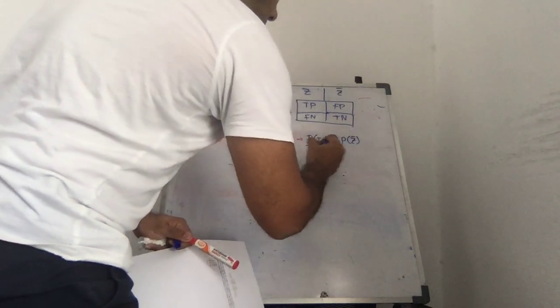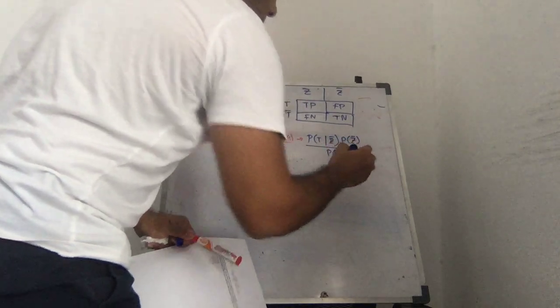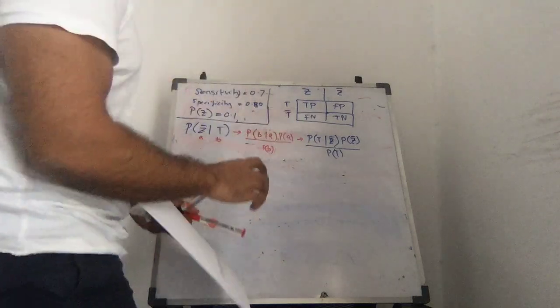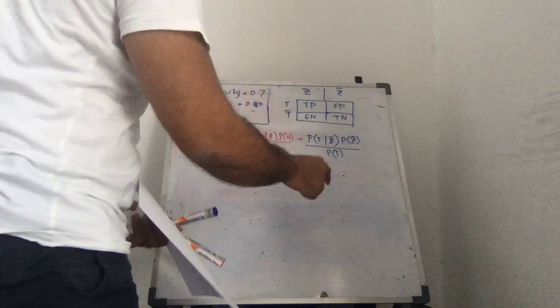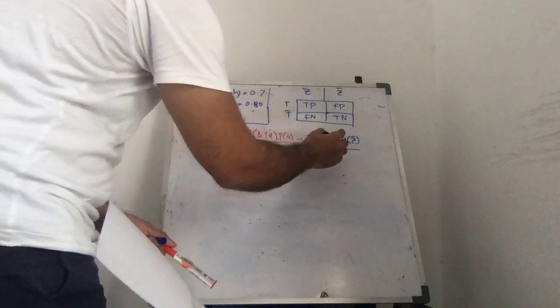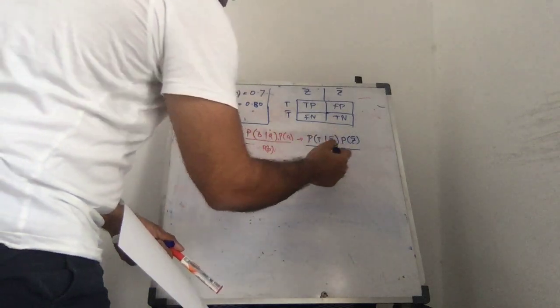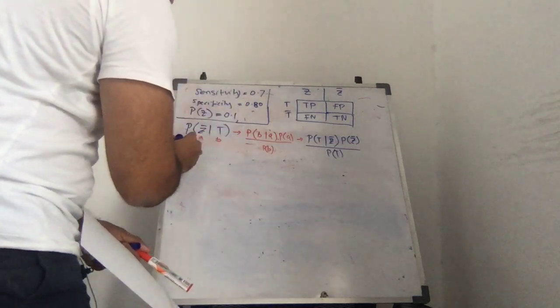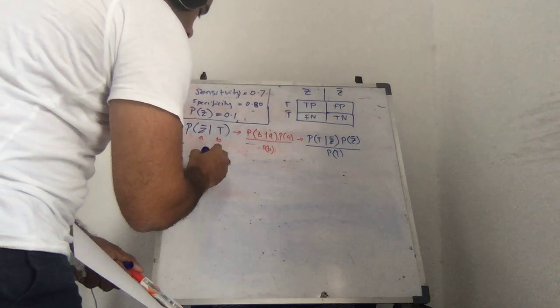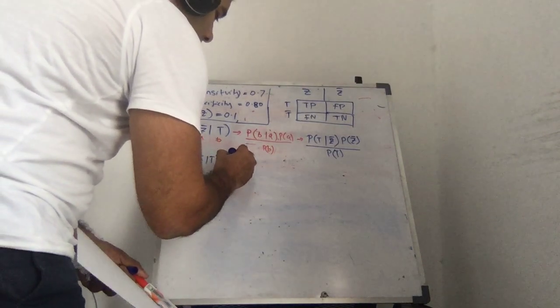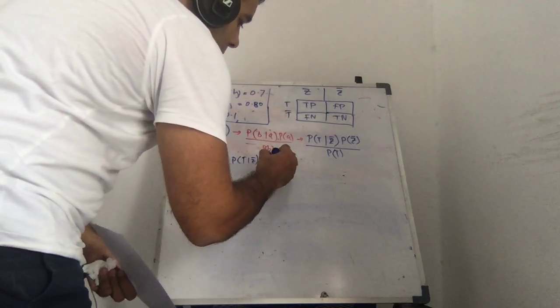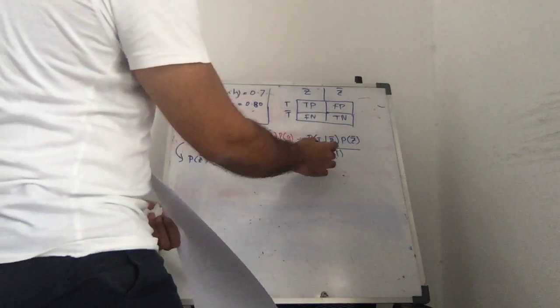So we can write this out as probability of not Z given T is probability of T given not Z times the probability of not Z divided by all the ways that T can be true, right? So T can be true if someone has the disease and the test is positive or someone doesn't have the disease and the test is also positive, right?